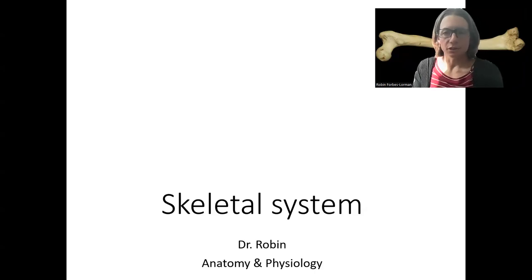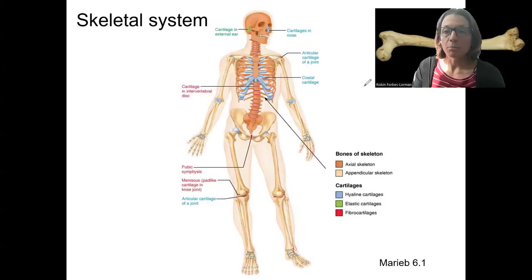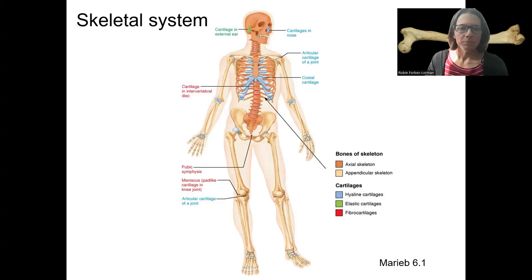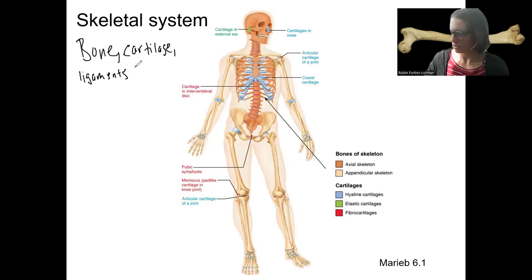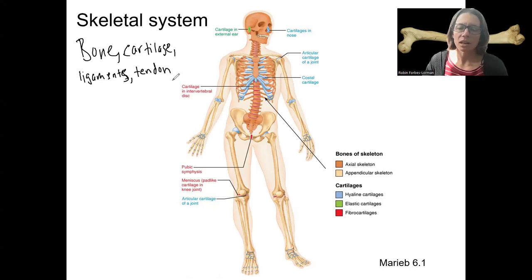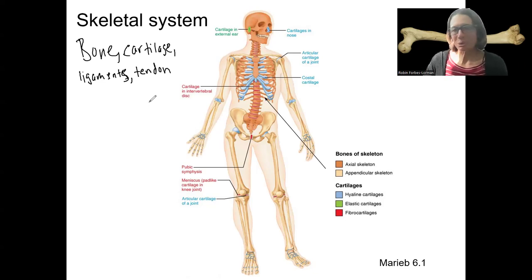We're starting with the skeletal system. The skeletal system consists of bone, and also all the supporting connective tissue that connects bone to itself and other tissues — so cartilage, ligaments, and tendons can also be considered part of the skeletal system. Tendons connect bone to muscle. So all the connective tissues that stabilize bones, including bones themselves.